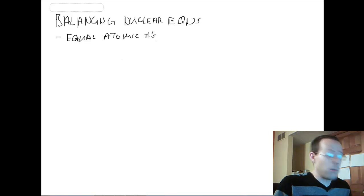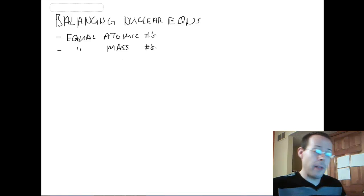Atomic numbers are simply our number of protons, so equal atomic numbers and equal mass numbers. Mass is protons plus neutrons, and if those are balanced, we're good.